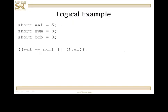Okay. As an example, if we again have val, num, and bob, 5, 8, and 0, all typed short, then is val equal to num? Val is 5, num is 8. Okay. Is val equal to num? No. That's false. Val is 5. What is that? Well, that's true. Not true is what? That's false. Okay. And what's false or false? That's false. So this expression turns out to be false.